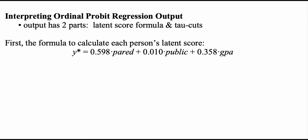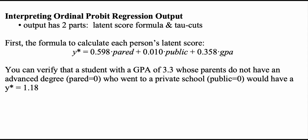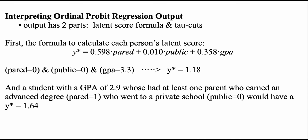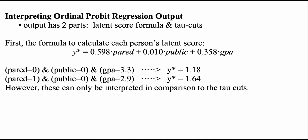Using the coefficients, we can create a formula to predict the latent variable score. A student with a GPA of 3.3 whose parents did not have an advanced degree and who attended a private school would have a y* of 1.18. A student with a GPA of 2.9 with at least one parent holding an advanced degree who attended a private school would have a y* of 1.64. However, these values can only be interpreted in comparison to the tau cuts.